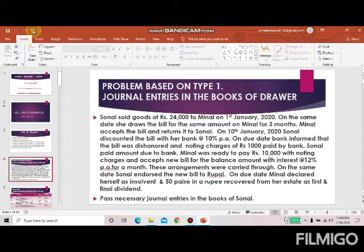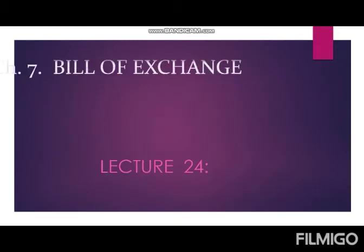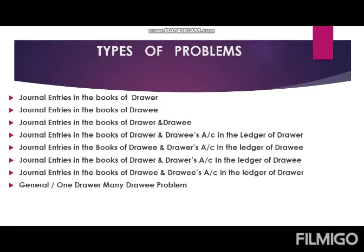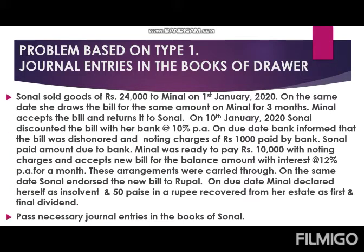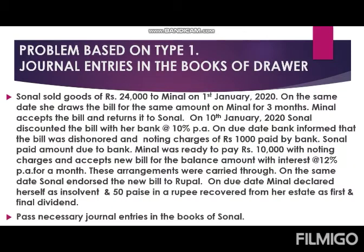We discussed the full problem of bill of exchange and started with reading the problem first. Today we start with the solution. I remind you: the problem is journal entries in the books of the drawer. This is the first type we are going to discuss today, and you already have the problem with you.